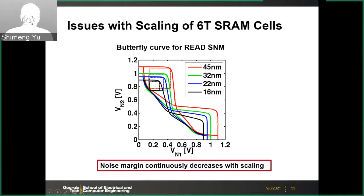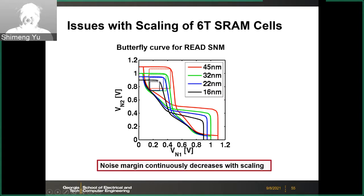During the read operation, the SRAM cell is more sensitive to noise, producing a shrunken butterfly curve. With scaling, you have smaller and smaller noise margins, so we have to deal with this reduced noise margin.